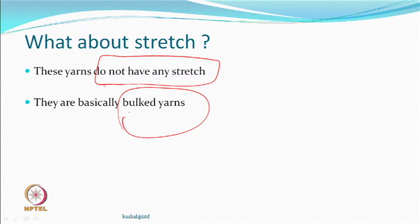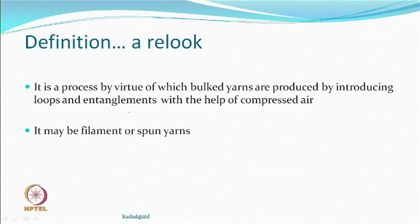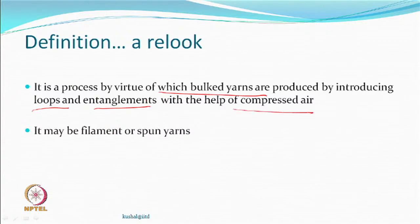A modified stretch yarn was a derivative where you apply a second heater treatment to reduce stretch. But this material — air jet textured yarn — is different. Revisiting the definition: it is a process by which bulked yarns are produced, using loop formation and entanglements via compressed air. It need not be a flat filament yarn — it could be any yarn, including a spun yarn.